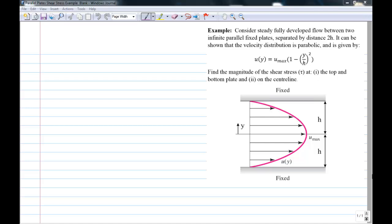This one's just a little bit more complex and the problem reads: consider steady fully developed flow between two infinite parallel plates separated by a distance h. It can be shown that the velocity distribution is parabolic and given by this expression here. Indeed, in chapter four we're going to derive that for steady laminar flow you can show that the velocity distribution is parabolic.